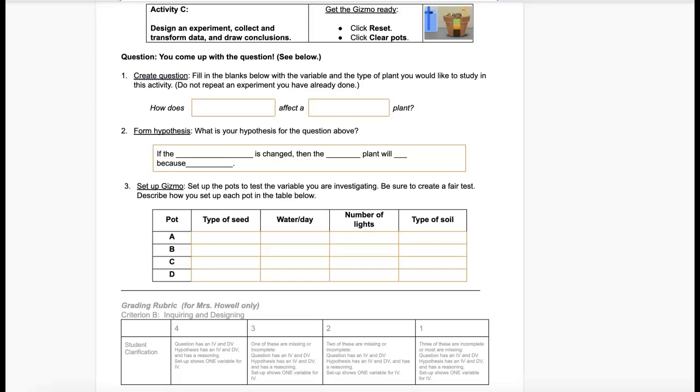This video explains how to do the Criterion B part of the Growing Plants Summative, which is an alternative to the Science Fair project. There are three questions to complete. The first question is creating your inquiry question.